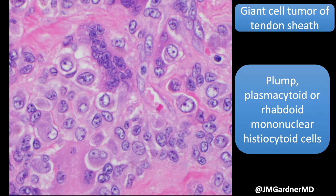Here's a closer look at those cells. They are plasmacytoid — or I kind of think of them almost as rhabdoid; plasmacytoid is probably a more apt term — but I lump those two terms together. Recognize that those are the lesional cells you want to find in a giant cell tumor of tendon sheath. Mitoses are usually present and can sometimes be quite abundant — many mitotic figures — and they can look really quite scary when you see cases like that.